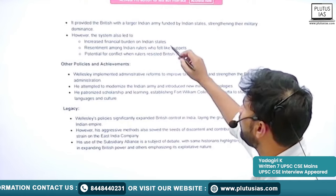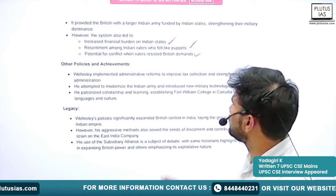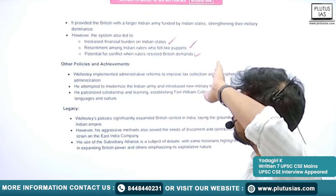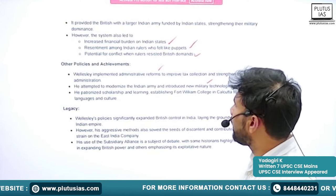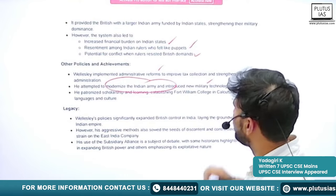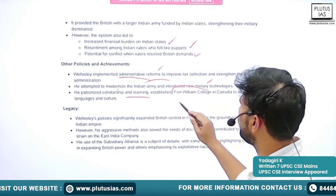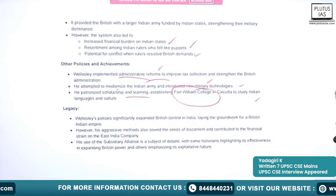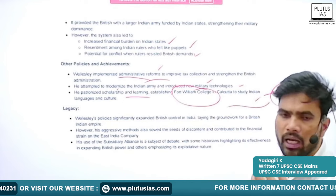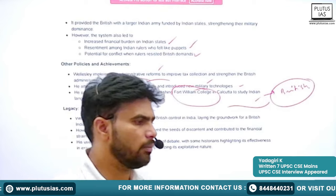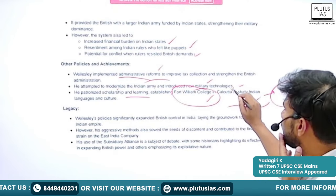The Subsidiary Alliance System led to increased financial burden on Indian states, resentment among Indian rulers who felt like puppets, and potential for conflict when rulers resisted British demands. Wellesley also implemented administrative reforms to improve tax collection and strengthen British administration, attempted to modernize the British army, and patronized scholarship and learning. He established the Fort William College in Calcutta to study Indian languages and culture — especially to train British officers in the ways of the Indian system. This is a very important point to remember.